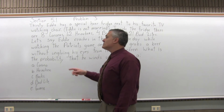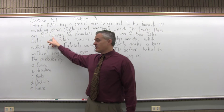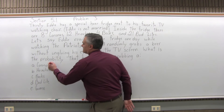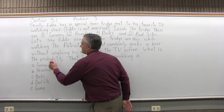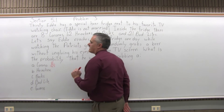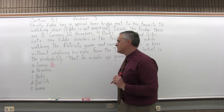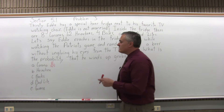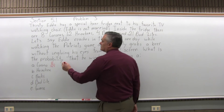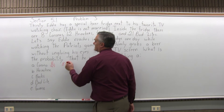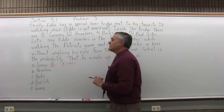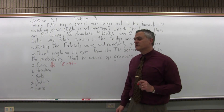8 of those 45 bottles are Corona, so the probability that when he reaches in he gets a Corona would be 8 over 45. Now that doesn't reduce that well. You can turn it into a decimal or a percent by doing 8 divided by 45, but you don't have to — 8 over 45 is fine.